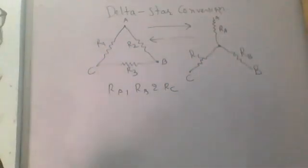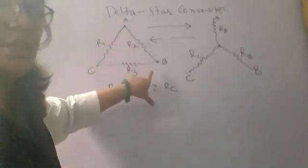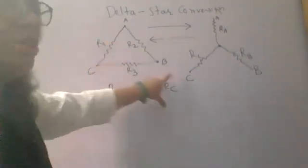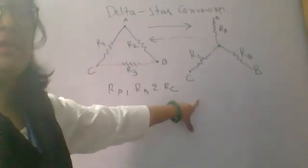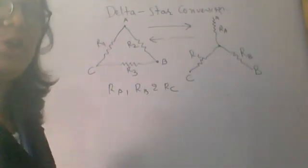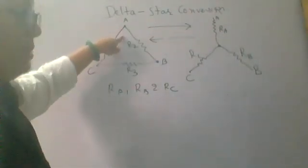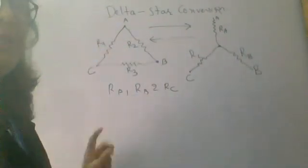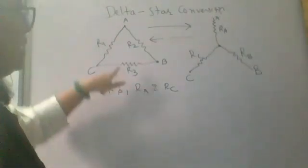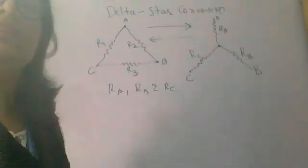When we start our derivation, first note that the resistance between any two terminals is the same in both systems, delta and star. That is our starting point - the total resistance between any two points in star and delta is equivalent.